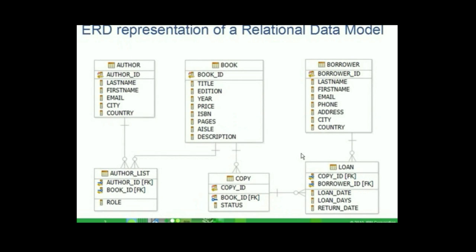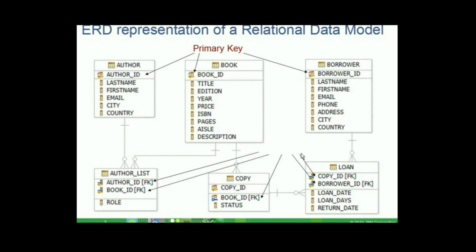Take a look at the relational model representation in ERD form. We have several entities like author, book, and borrower. Note that author ID, book ID, and borrower ID carry a special icon that features a key — such attributes are termed as primary keys. Observe the entities at the lower portion of this ERD; some attributes have FK mentioned next to them in brackets. These are termed as foreign keys. Notice these entities are part of the relationship set between the entities above them, and all of them have a one-to-many relationship established between them.